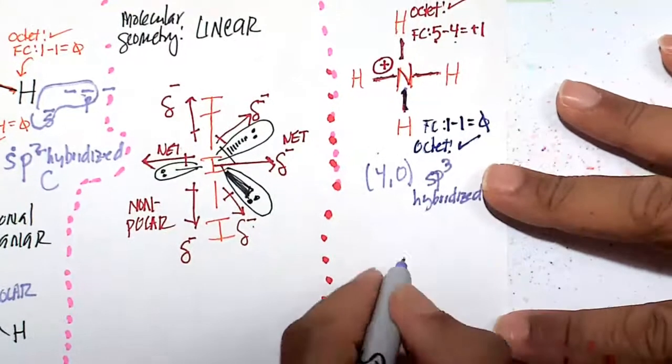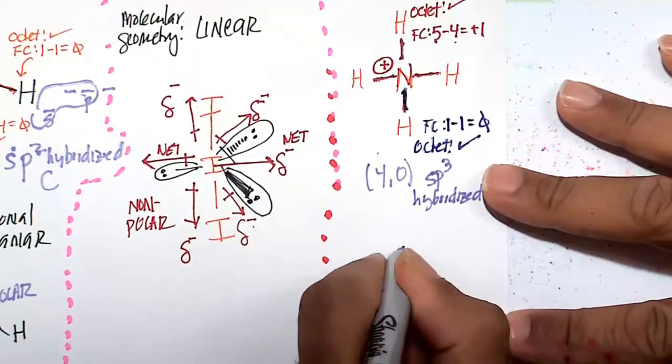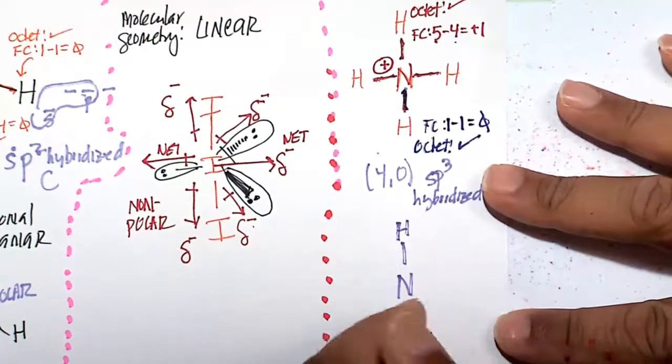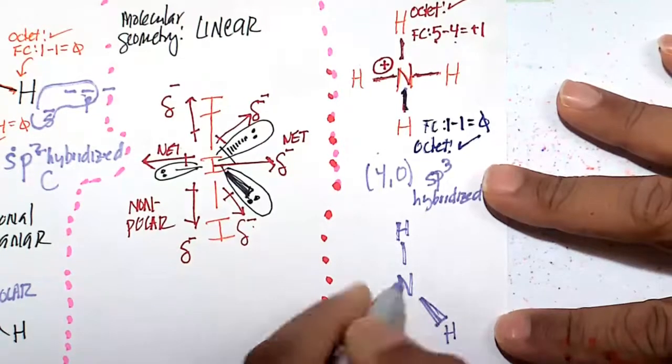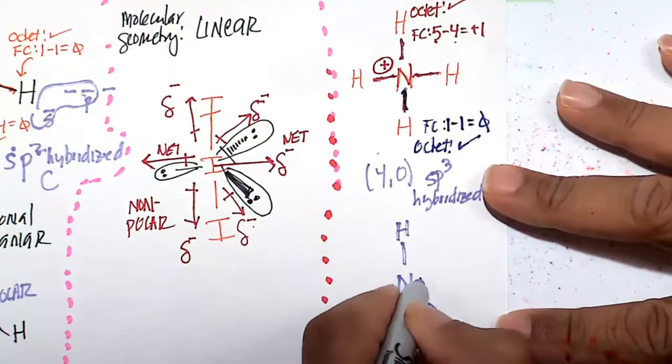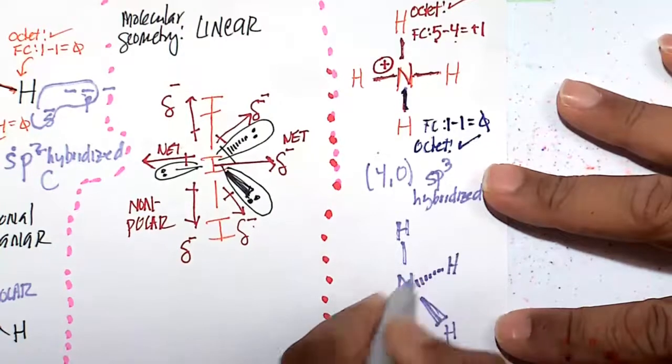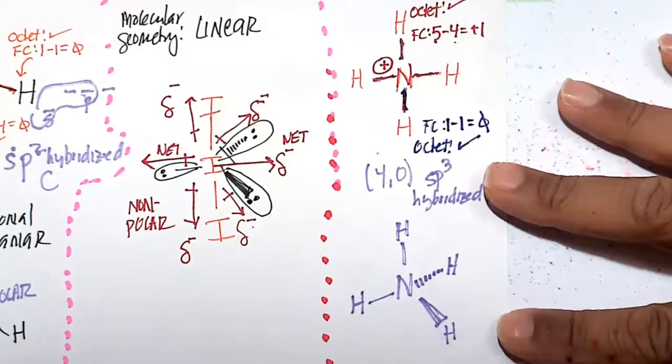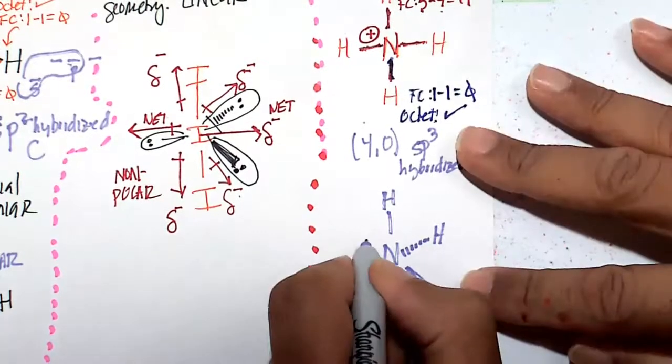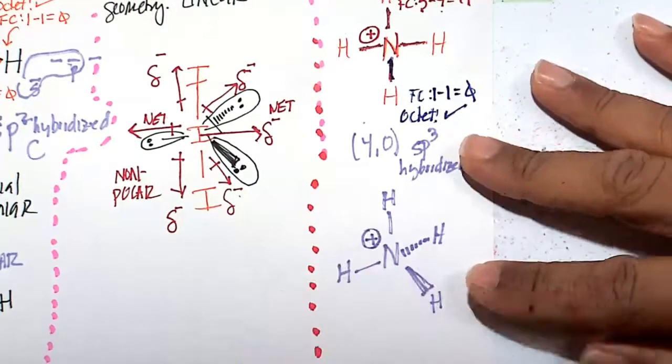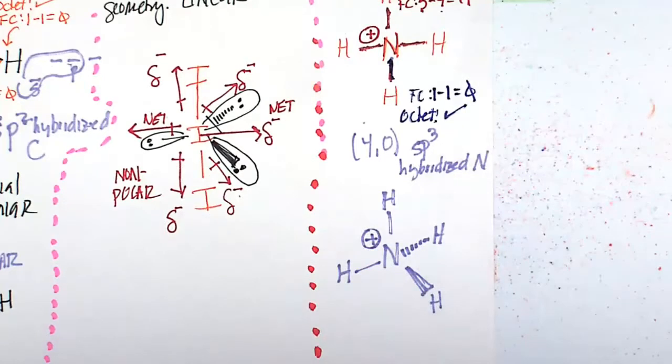And we can draw this as a tetrahedron here. So 1 hydrogen is here, 1 hydrogen is going to come out towards you guys, 1 hydrogen is going to come back. These are the different substituents. And that will be the structure of NH4. Don't forget the positive formal charge here. It picked up an H to become a positive formal charge.